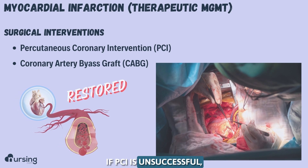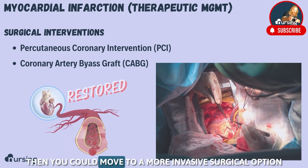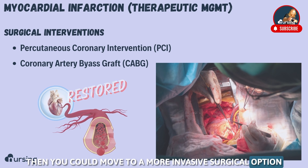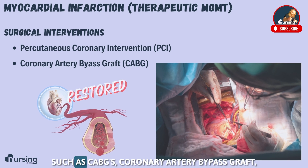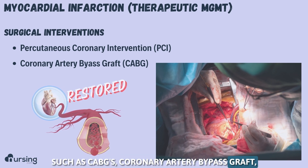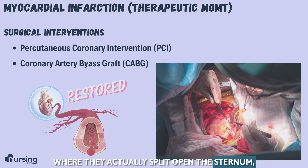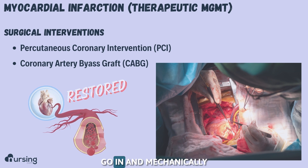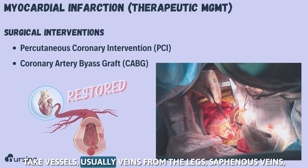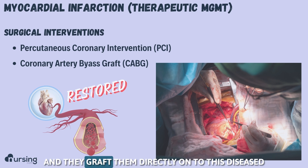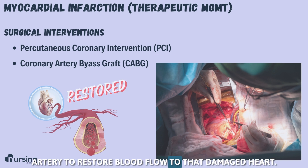If PCI is unsuccessful, you could move to a more invasive surgical option such as CABG — coronary artery bypass graft — where they actually split open the sternum, go in and mechanically take vessels, usually veins from the legs such as the saphenous veins, and graft them directly onto the diseased artery to restore blood flow to the damaged heart.